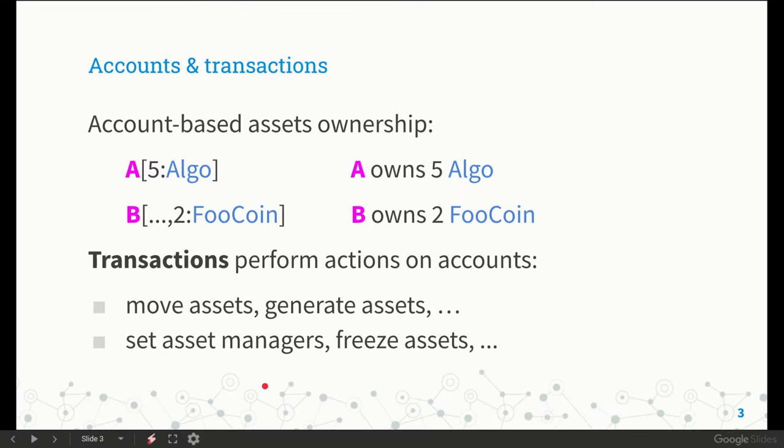To illustrate our contributions, I will first introduce the mechanism of transactions implemented by Algorand. Algorand is an account-based blockchain. This means that the state of the blockchain can be seen as a set of accounts, each one holding units of one or more assets.